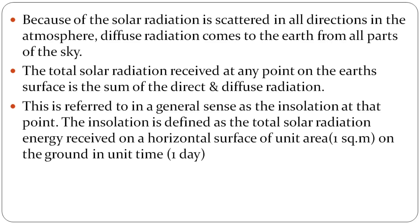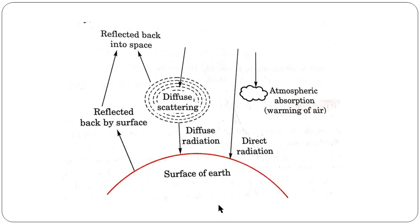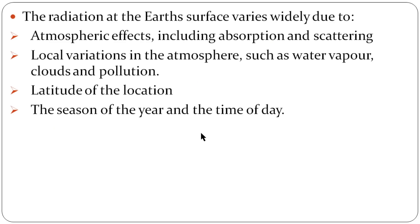The total solar radiation received on a horizontal surface of unit area — that means 1 square meter on the ground — in unit time, that means 1 day, is called insolation. To explain insolation, we consider radiation reflected back by the surface and absorbed by atmospheric absorbers. These are the atmospheric effects including absorption and scattering.